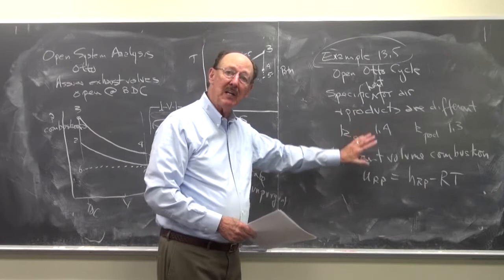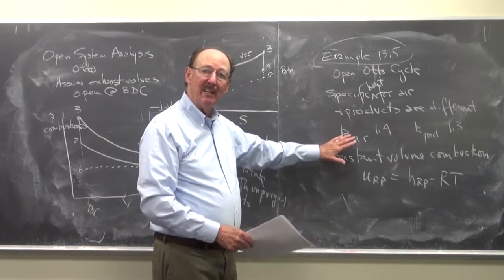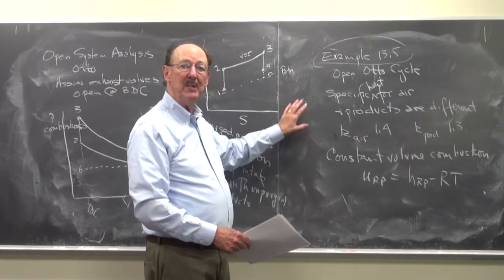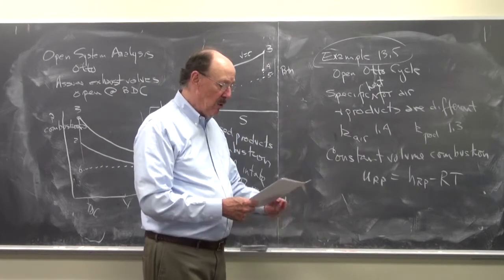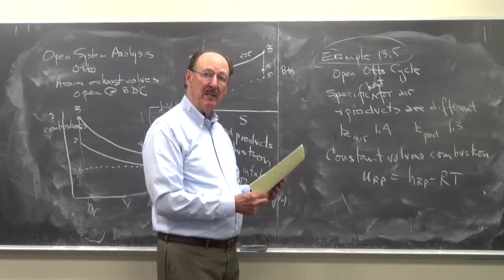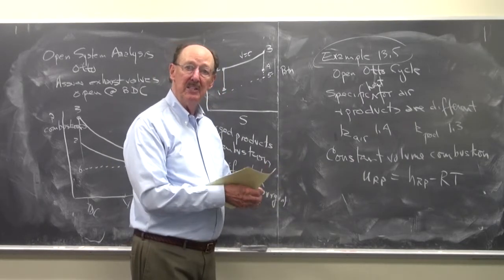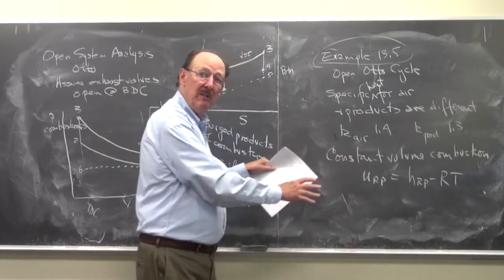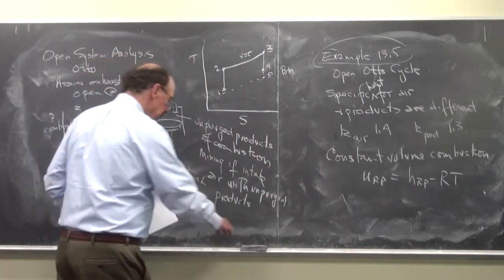And so I need, these are the corrections that are done in example 13.5. So it's an open Otto cycle, and you can read that. What I'm going to do next, which is not in the text, is to do an open diesel cycle analysis. So what I wanted to do next is problem 13.33, and then we'll do an open diesel cycle analysis. So you'll have it for the Otto cycle, and you'll have your notes for the diesel cycle.